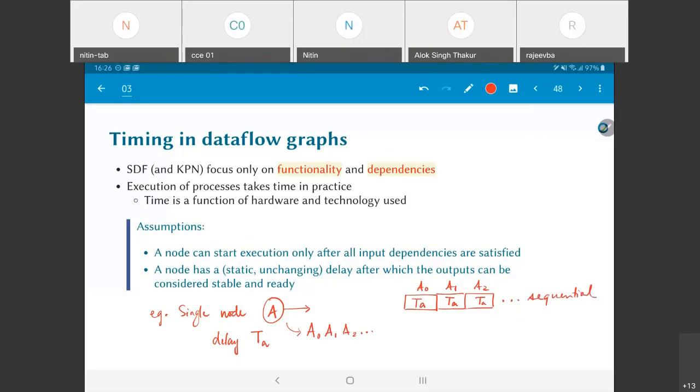But if I only look at A, the way that I have drawn it, there are no input dependencies. So there is no particular reason why A1 should start only after A0. I could equally well have had A0 over here, A1 over here, A2 over here and so on. These are not mutually dependent. And this is something to keep in mind. The fact that the graph by itself only captures dependencies.